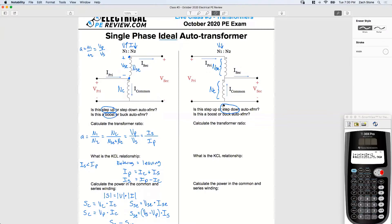Now, is this a boost or is this a buck auto transformer? This is a buck. Again, buck typically just means you're stepping down by a small amount, right? 4%, 5%. Same thing with boost. You'd be stepping up by a small percent. Alright. Let's do the same thing. Calculate the transformer ratio.